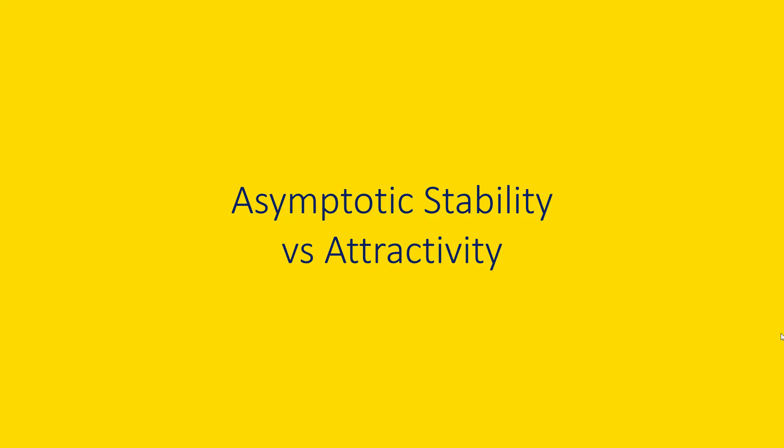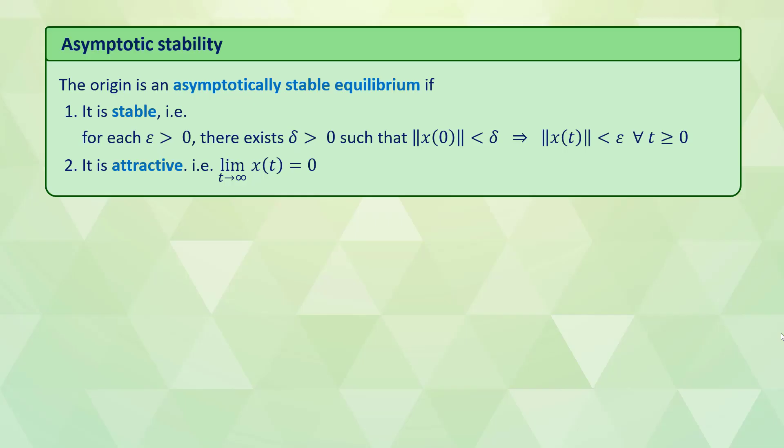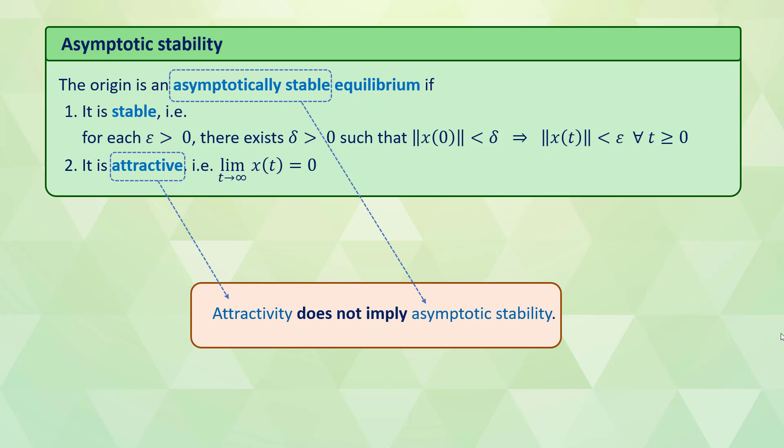We now show using an example that attractivity of an equilibrium point is not a sufficient condition for asymptotic stability. There are systems for which all trajectories starting near an equilibrium converge to that equilibrium, but the equilibrium is not asymptotically stable in the sense of the definition. We present an example to better understand the difference between attractivity and asymptotic stability.